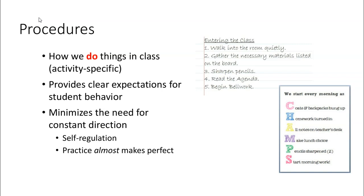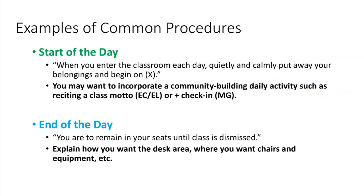The reason you want procedures is that this minimizes the need for constant redirection and builds self-regulation in students. There is a need for practice. Just because you put the five steps for entering the classroom up on the board doesn't mean students will automatically do it. The first two or three weeks of school, you basically outline what are the procedures for entering the classroom, what are the procedures for peer review. You might start with two or three procedures and every day highlight them, talk about expectations, and then practice. Over time, if there is practice, students generally understand the procedures, your expectations, and how to follow through.